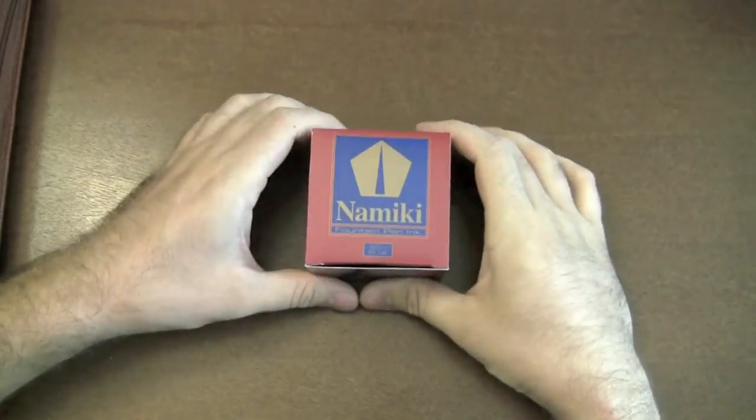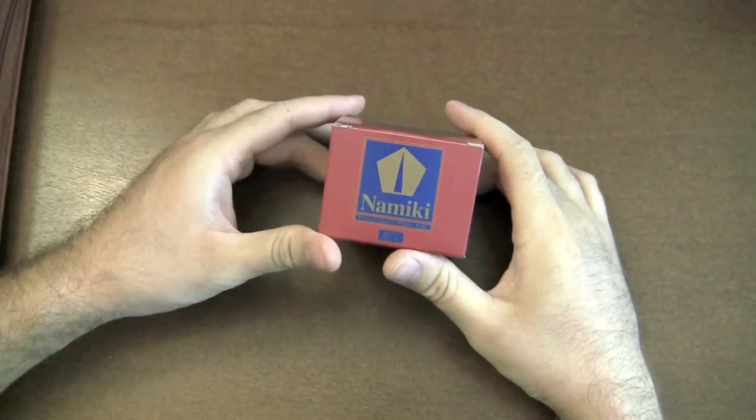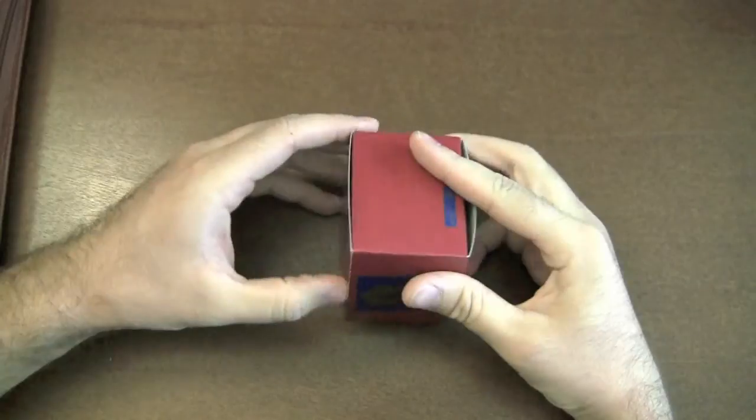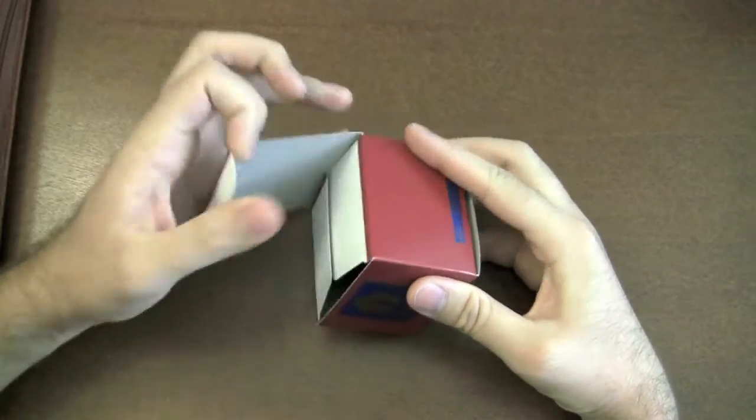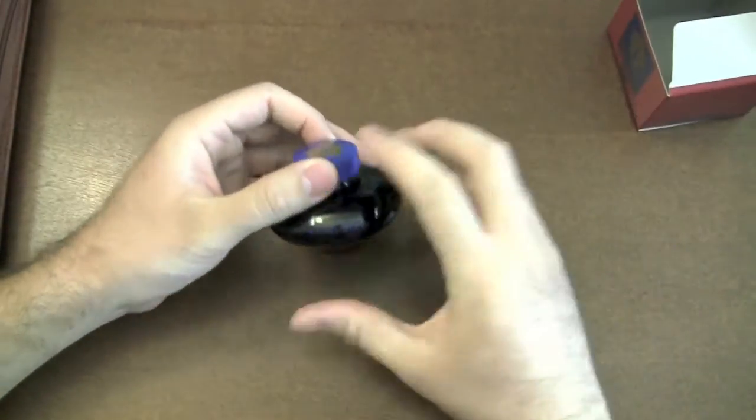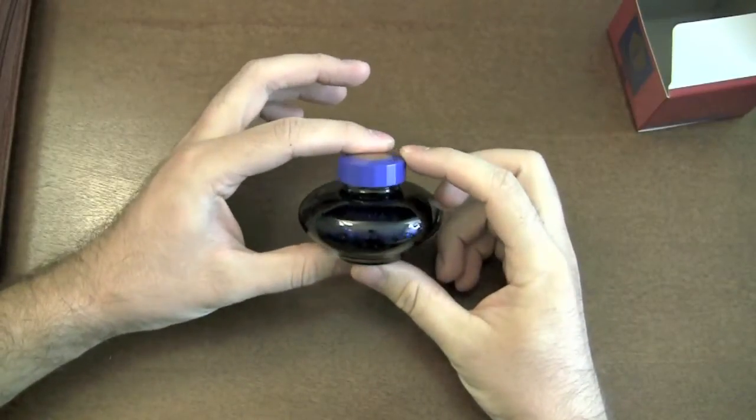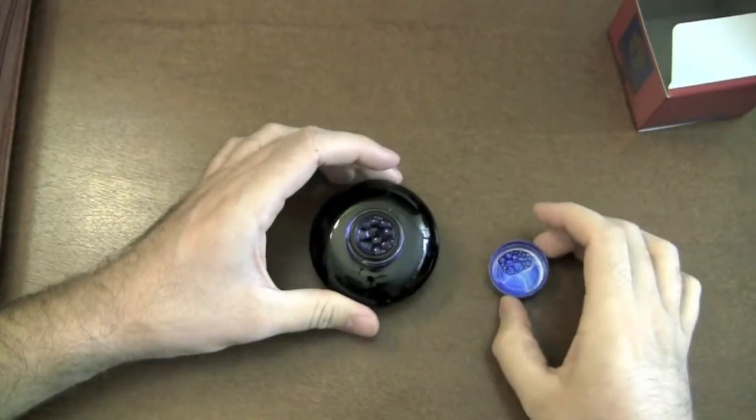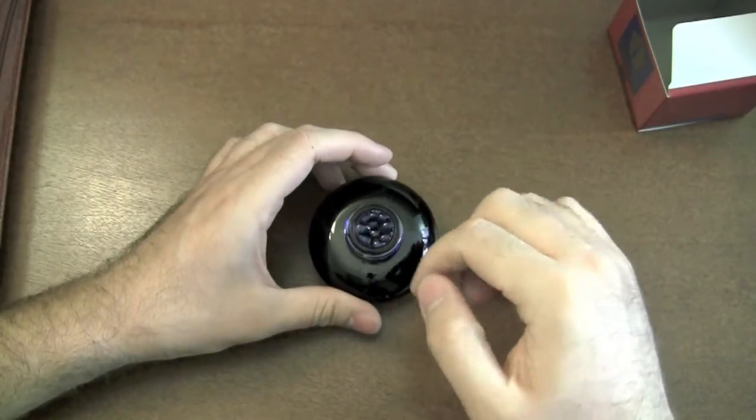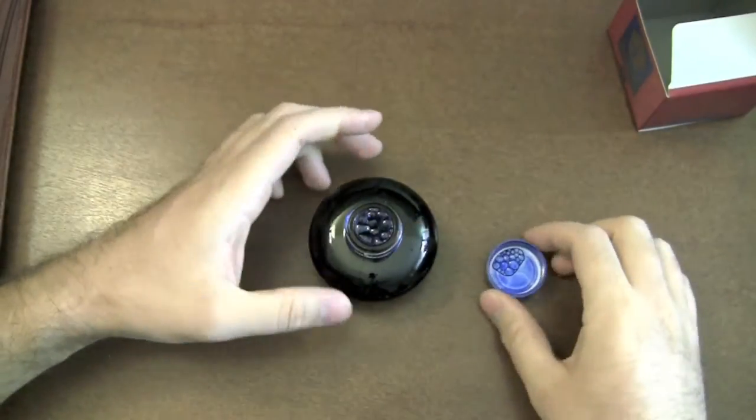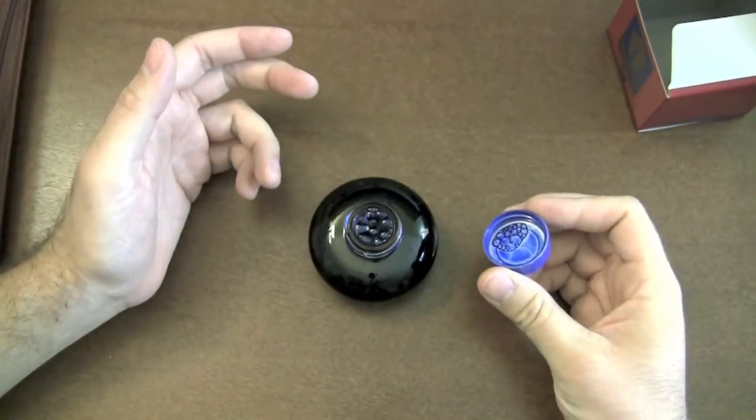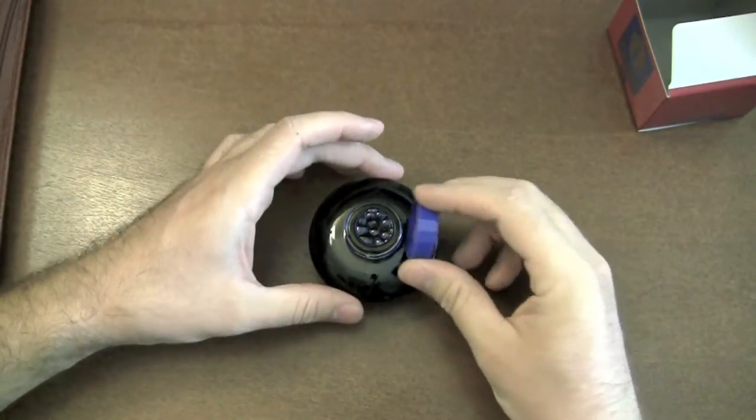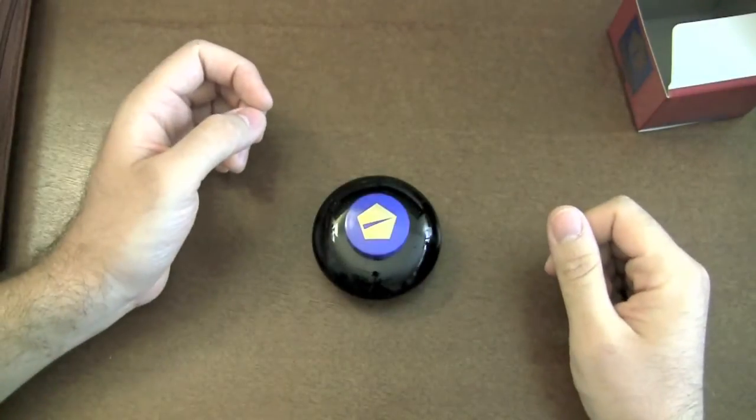Alright, here we are checking out Namiki's Blue. That's all it's called, Namiki Blue. It's a 60ml bottle and it's kind of a cool design on the bottle, very artsy, kind of interesting. One cool thing about it, I don't know how well you'll be able to see it, but there is a little cup inside, a little reservoir, sort of like the Sailor inks. It's a little plastic cup on the inside where it helps you to get the ink out.